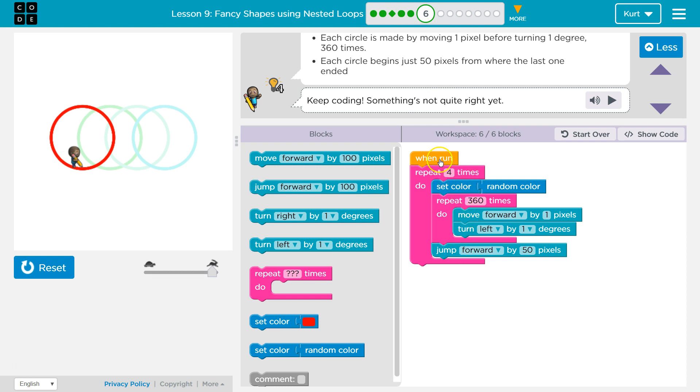So the computer says, okay, run four times. Pick a color. Now 360 times move forward, change one degree. Forward one degree. Forward one degree. It does that 360 times. Once it's done, it drops below it and says, okay, now jump forward 60 or 50. So I jump to the start of the next circle. I hit the bottom of this bigger loop now. And it goes, oh, run all this again. And draws another circle. Let's test.